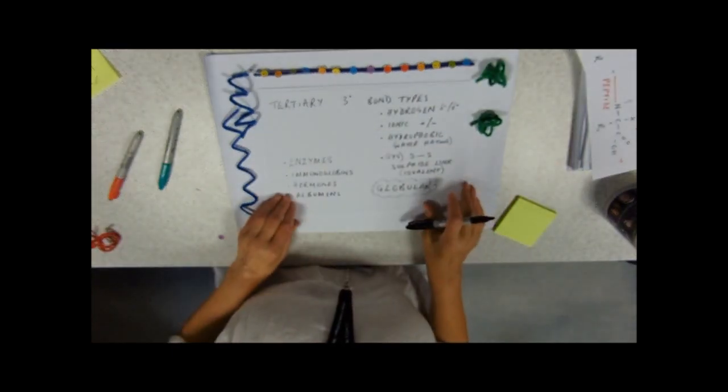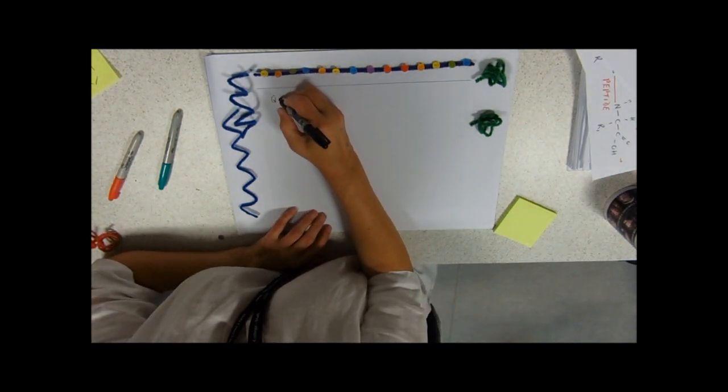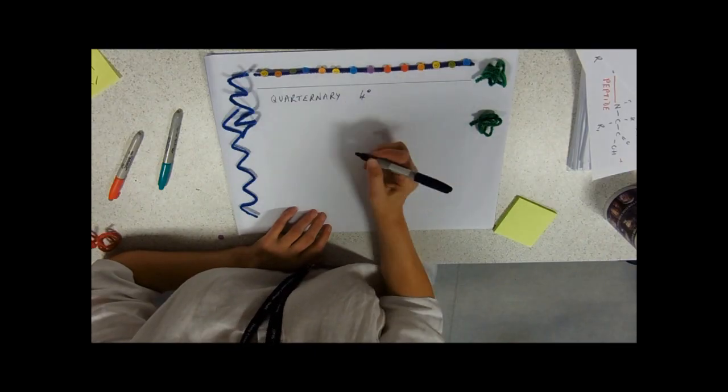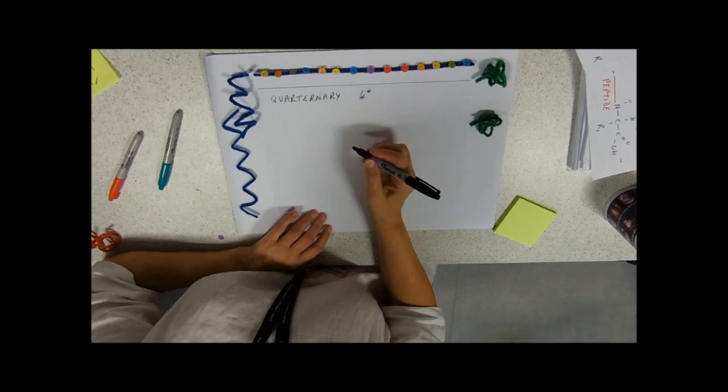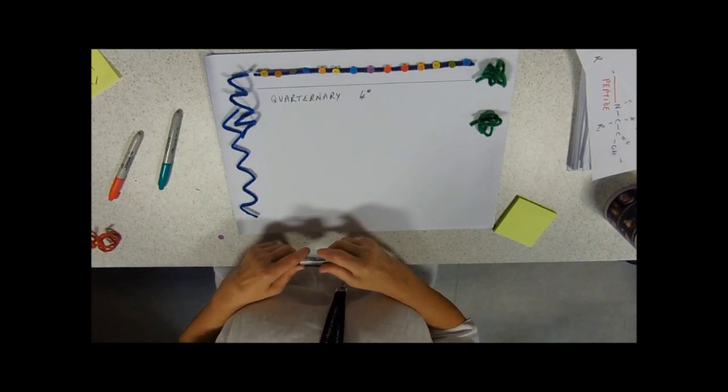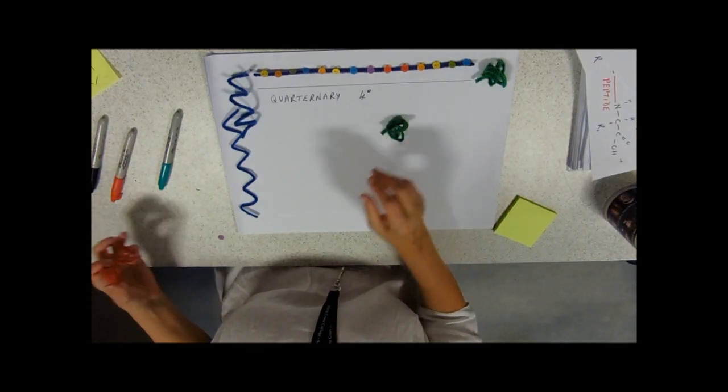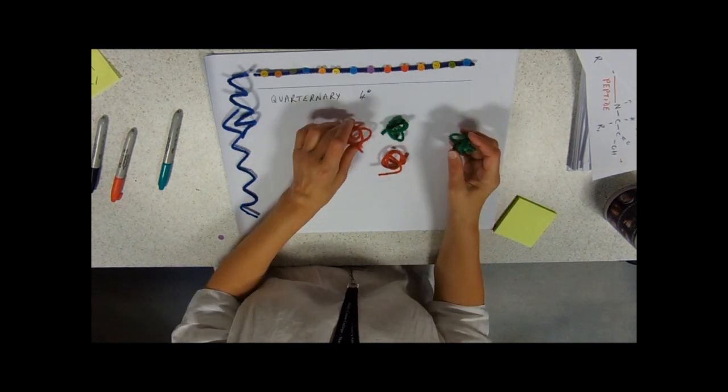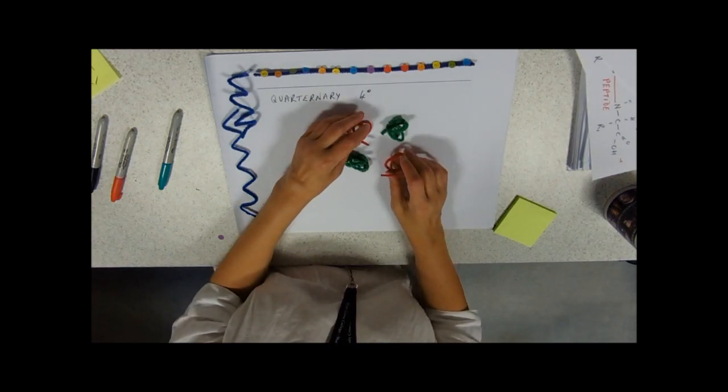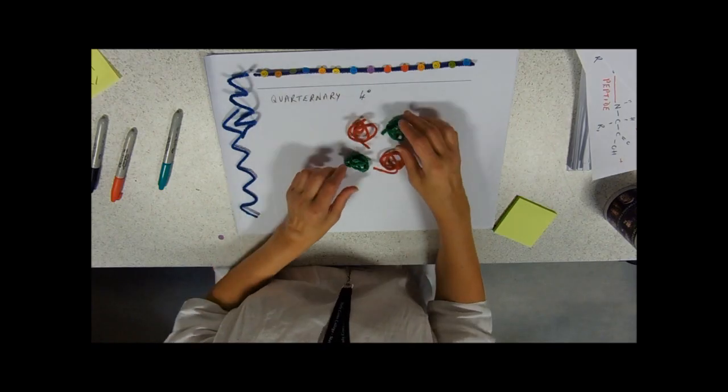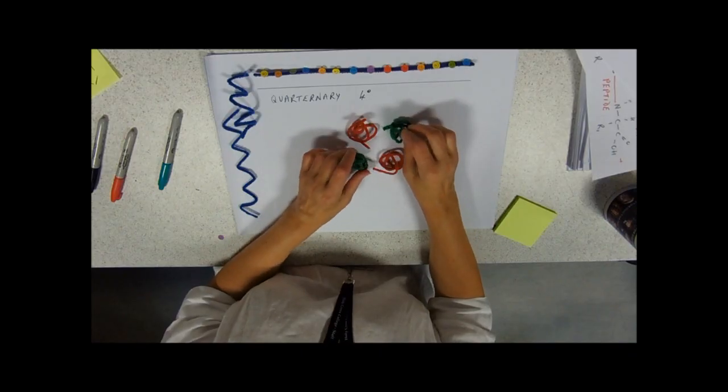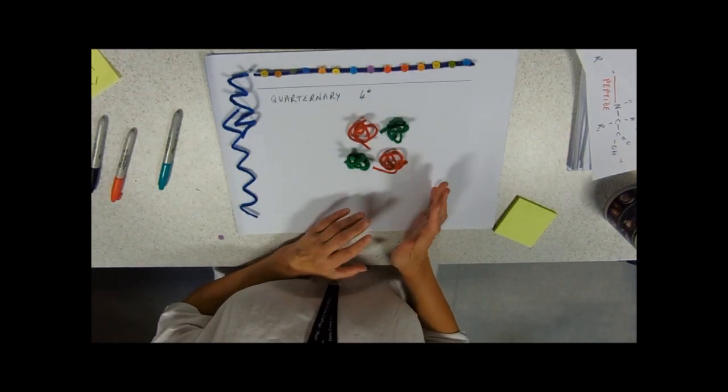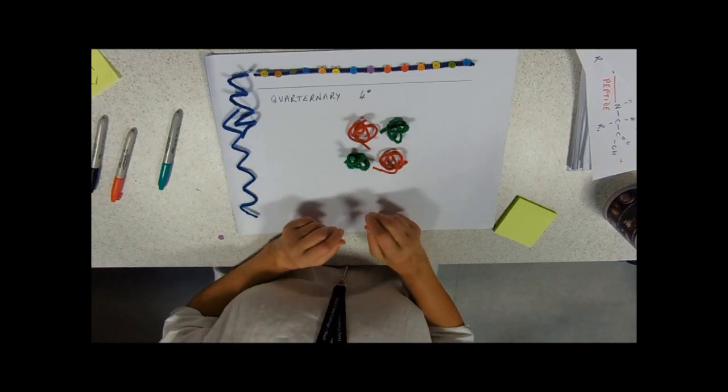I'm going to stick my tertiary structure ones over there. And we're on to our last level of protein structure now, which is quaternary structure. Again, you often see it as a four with a little dot. Now these are different primary structure proteins folded into a globular shape and then joined together, mostly by disulfide linkages. The example that you need to know is haemoglobin, which has two polypeptides of one sort folded into one shape, two polypeptides of another sort.